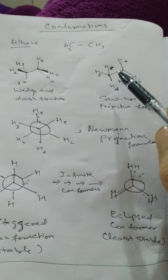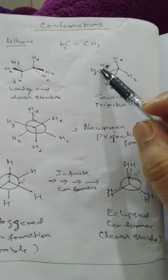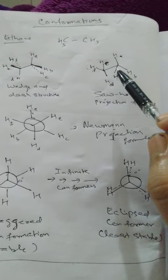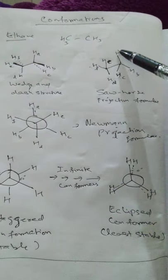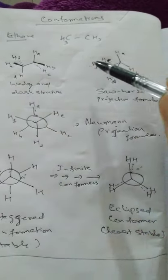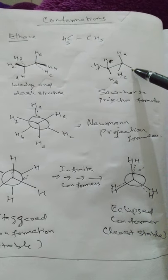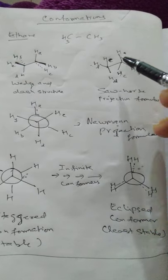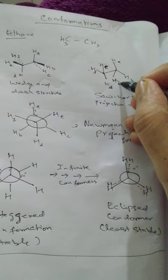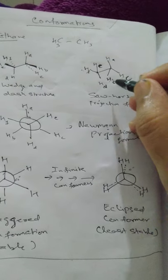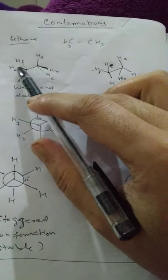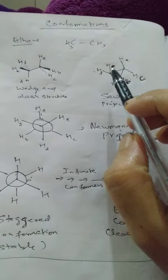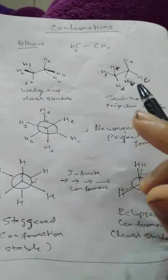Instead of wedge and dash, you can also draw the sawhorse projection, where bonds are shown tilted. H atoms are placed at each end accordingly — HA, HB, HC on one carbon and HD, HE, HF on the other. But this gets confusing, so I rarely use it.